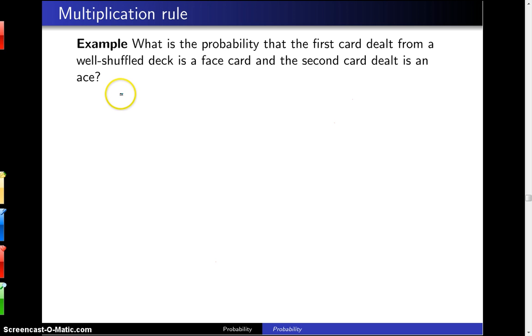The first step to solve this problem is to define the events. The first event I'm going to call F, and that is the event that the first card drawn from the deck is a face card. The second event I'm going to call A, and that is the probability that the second card that is drawn from the well-shuffled deck is an ace.